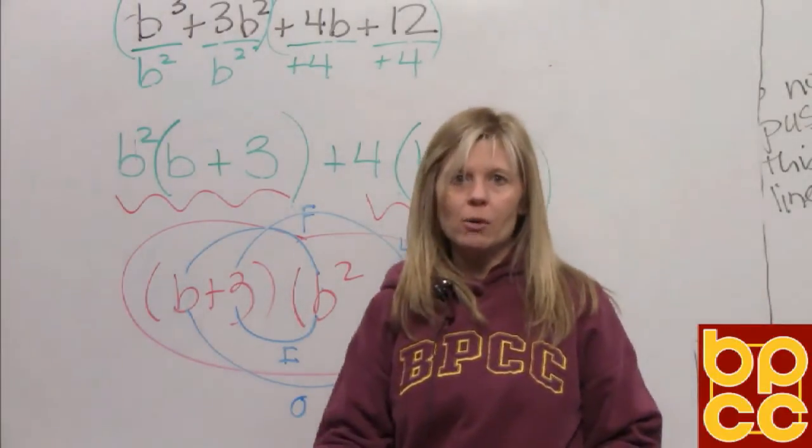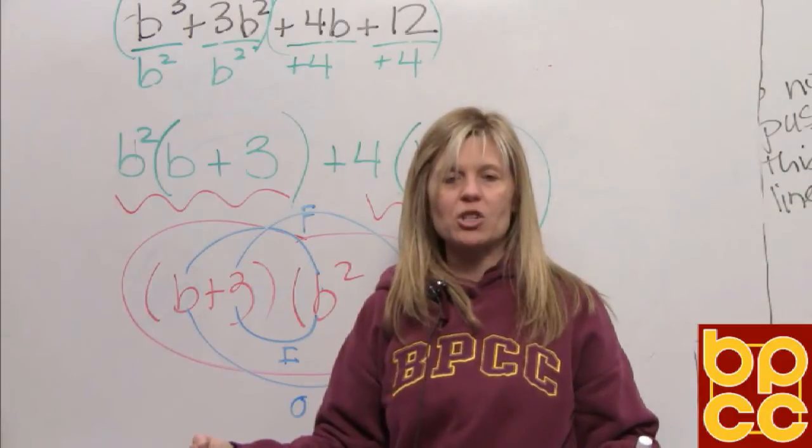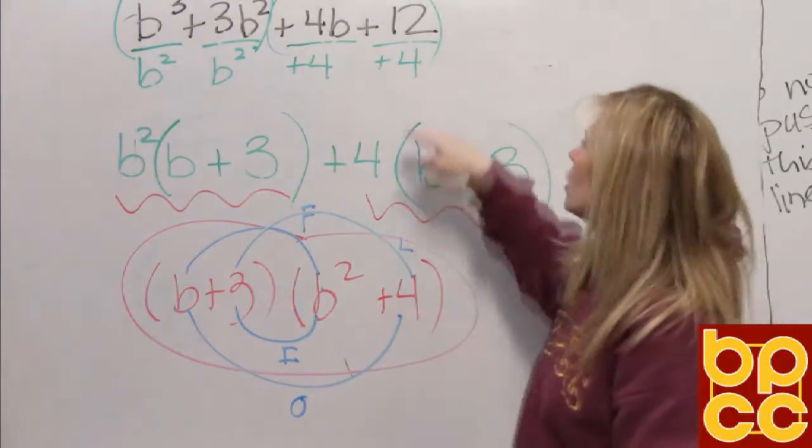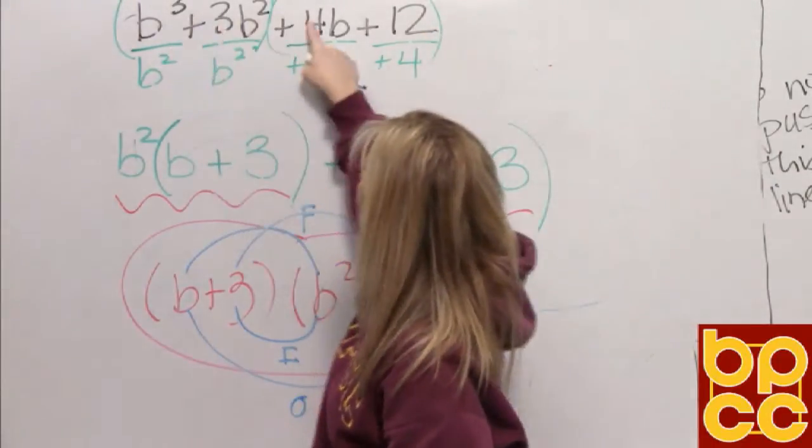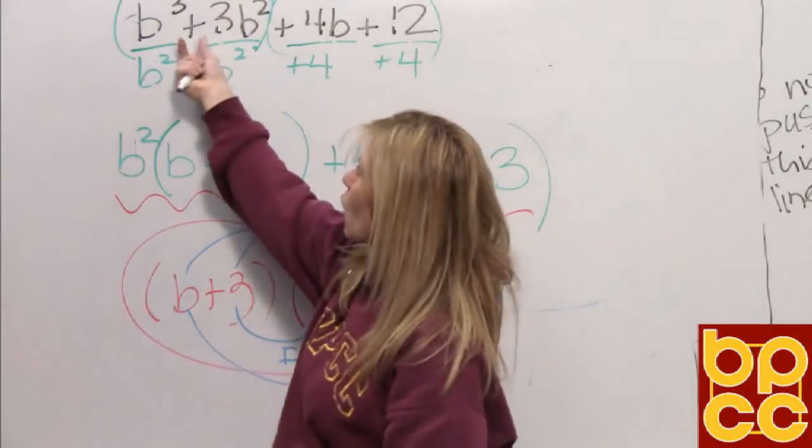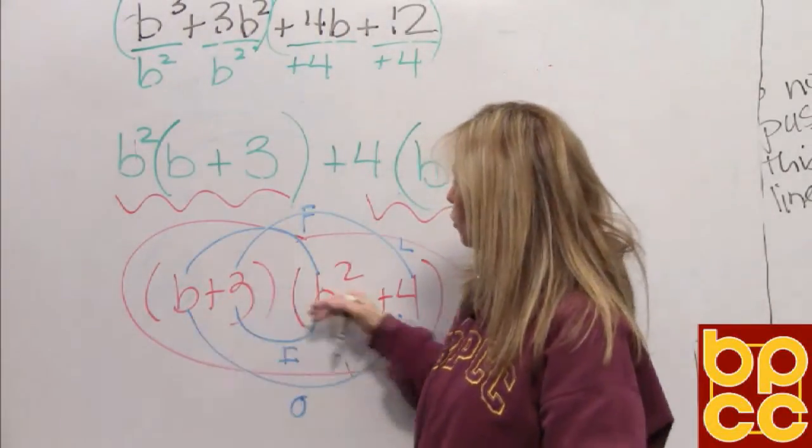So you'll always know you've done factoring correctly when you multiply the expression out, and you get back to where you started. So if you notice, when you factor by grouping, you're going to have 1, 2, 3, 4 terms always. You're going to group them like Noah's Ark, 2 by 2. And the final answer will always be 2 binomials.